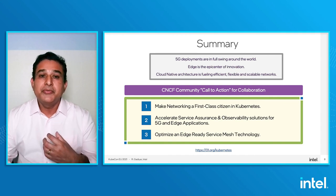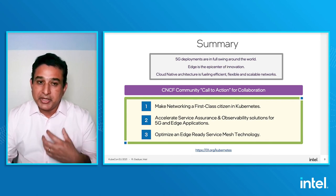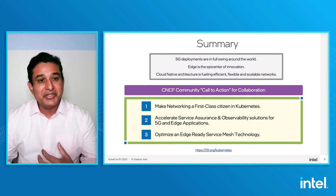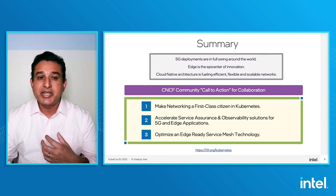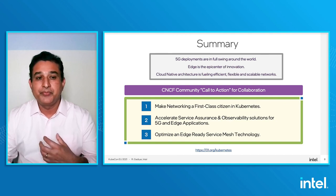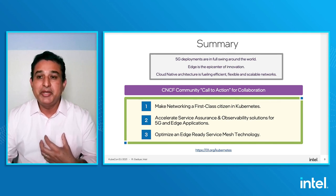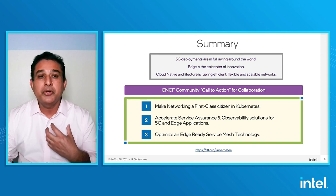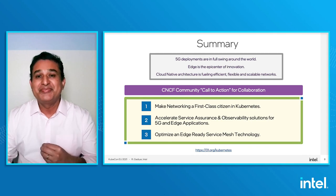Now, a quick call to action for the KubeCon community here. Let's collaborate in the three areas I talked about today as challenges: making networking a first-class citizen in Kubernetes; accelerating service assurance and observability solutions for 5G and edge applications; and optimizing edge-ready service mesh technology. Me and my team at Intel would love to engage with you more in these areas. So please reach out to us at 01.org/kubernetes so we can collaborate and deliver solutions for the future — a very bright future. Thank you.